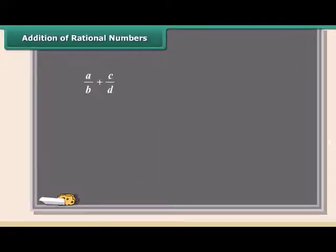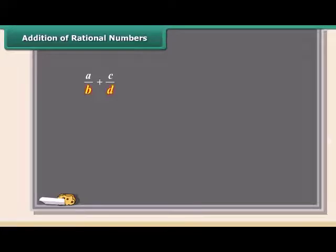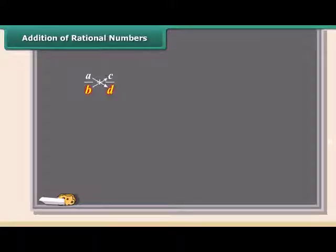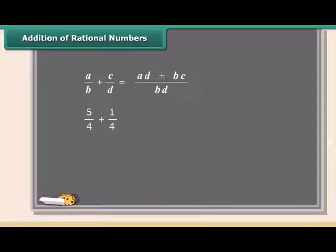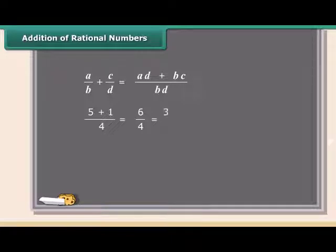To add rational numbers, the rational numbers should have the same denominator. The easiest way is to multiply both parts of each number by the bottom part of the other. For example, we will add 5 by 4 and 1 by 4. The denominators are already the same, so add the numerators and put the answer over the same denominator. This fraction can be further simplified to 3 by 2.